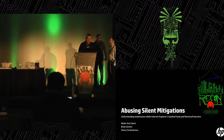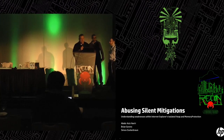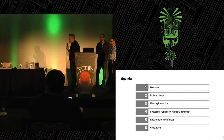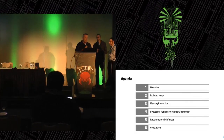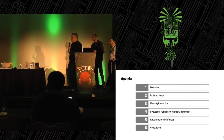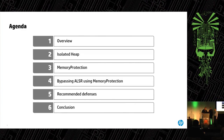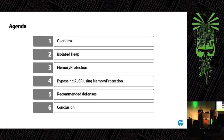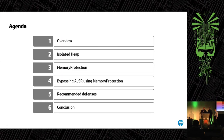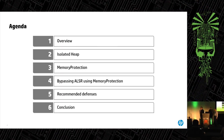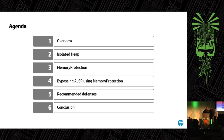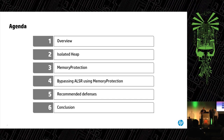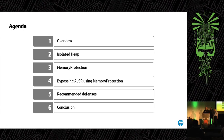All right, everybody, this is 'Abusing Silent Mitigations: Understanding Weaknesses in Internet Explorer's Isolated Heap and Memory Protection Mitigations.' We've got a lot to cover, so we're just going to dive right in. Today we're going to go over a comprehensive set of research we did in mid-2014 related to the isolated heap and memory protection mitigations that were introduced to make UAF exploitation harder on Internet Explorer.